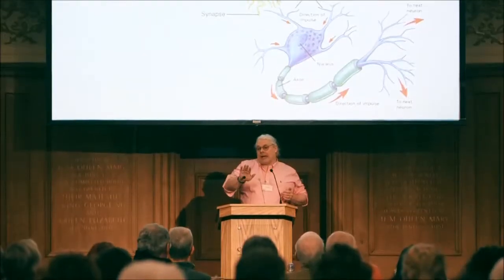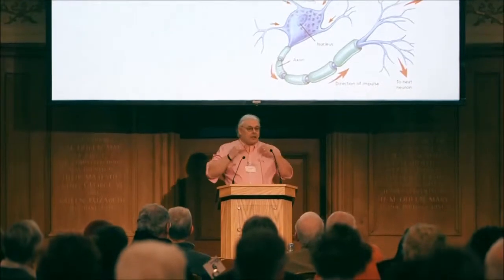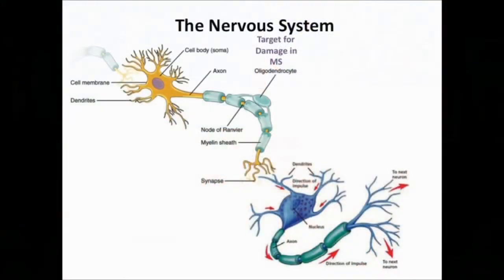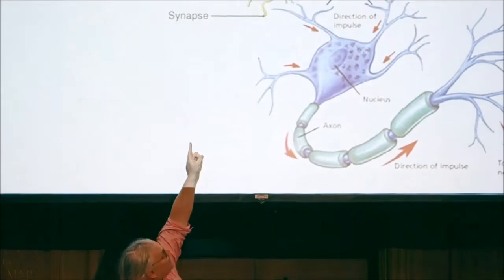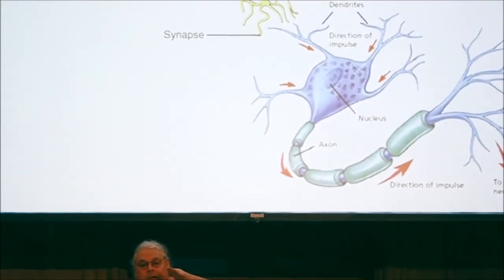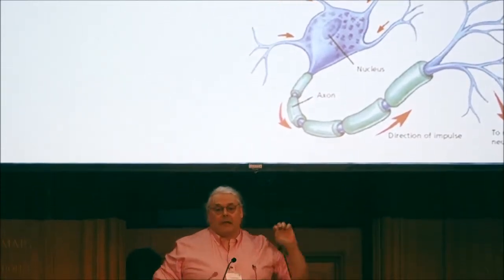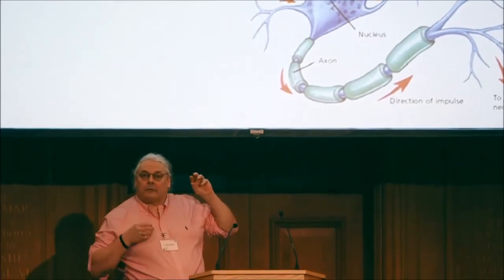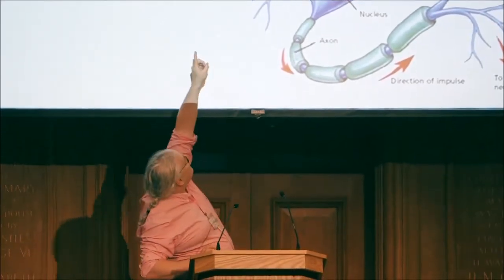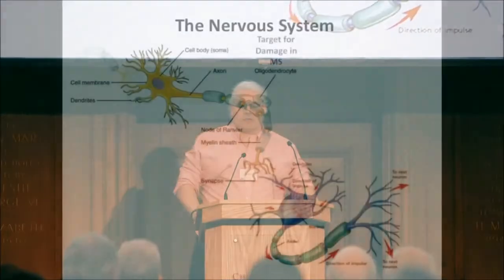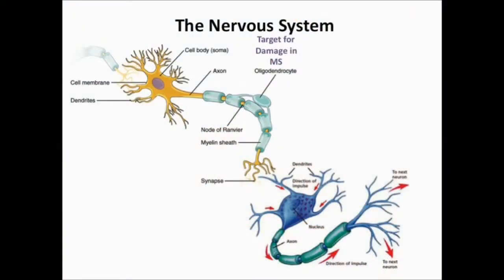How does information transmit? Say we sense something hot — we go 'ouch' and move our hand away. That signal is transmitted through nerves: it starts in a nerve cell body, the nerve impulse travels down the axon, then reaches a gap called a synapse where the nerve impulse has to jump across, and then it continues to the next nerve. The reason nerves can work so fast is because of an insulating sheath that wraps around the axon called myelin — a fatty insulation material made by a cell called the oligodendrocyte.